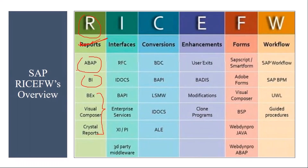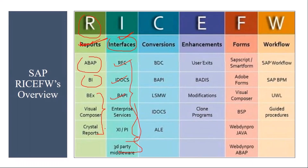I means Interfaces. In most organizations, even though they are using SAP, they will also be using some third-party applications. You need to send data from SAP to the third-party application and also sometimes receive data from the third-party application into SAP — that is handled through interfaces. The tools used for interfacing include RFC (Remote Function Calls), IDocs, and BAPIs, among other tools. When we go to the interface session we will discuss all these tools in detail and how to write a functional specification document for interfaces.